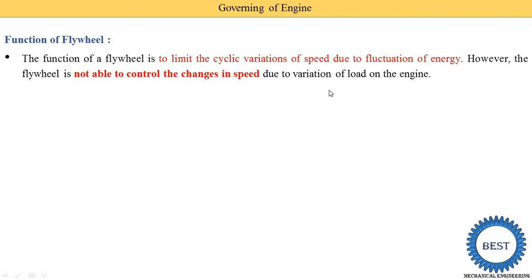Suppose we consider the IC engine in our bike or car. Load means the load is either increased or reduced. Suppose we take the example of the car - four people are going, then six or eight people are seated. That means the load on the engine is increased because the weight of persons inside the car is increased. Similarly, if we are going on a hilly area, the load on the engine is increased because the car is going opposite to the gravitational force, so the engine requires more power.